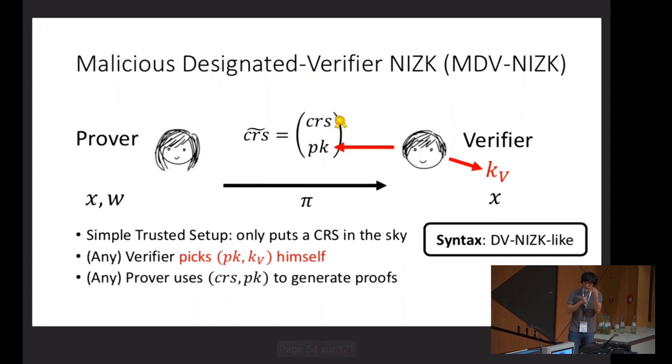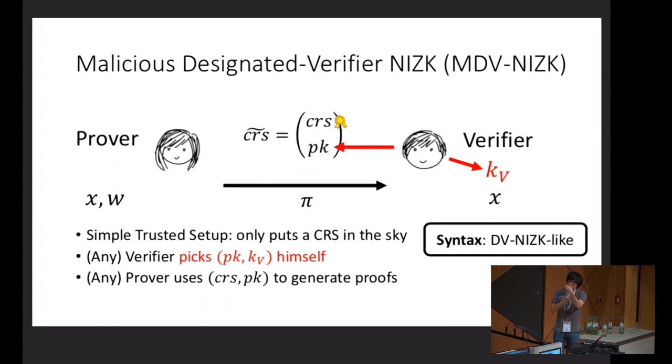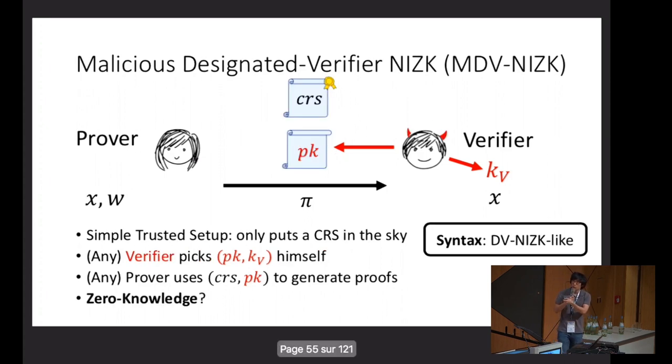So in particular, the only change we make is really in the setup phase. The protocol still has a strong flavor of designated verifier NIZK in the sense that the proofs are privately verifiable, and there's still hope that this will be easier to construct than NIZKs. But at the same time, we don't want to shift the trust of the trusted party to the verifier. In particular, the verifier could be malicious now.